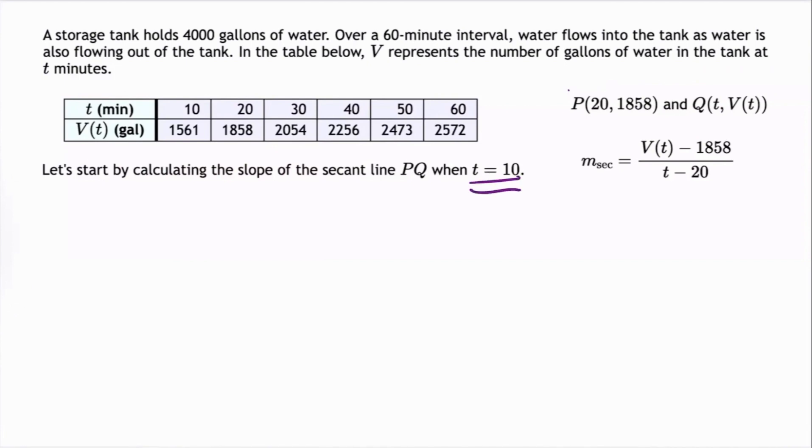So we need to substitute 10 into V(t) in the numerator for the slope of the secant line and substitute 10 in for t in the denominator. This gives us M_sec equals V(10) minus 1858 divided by 10 minus 20.